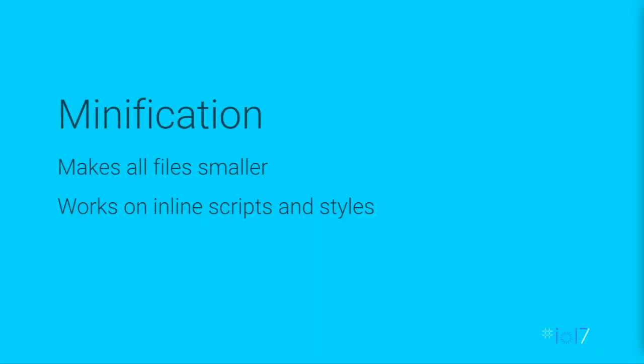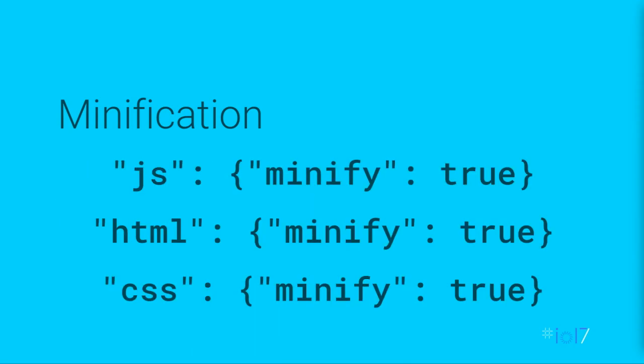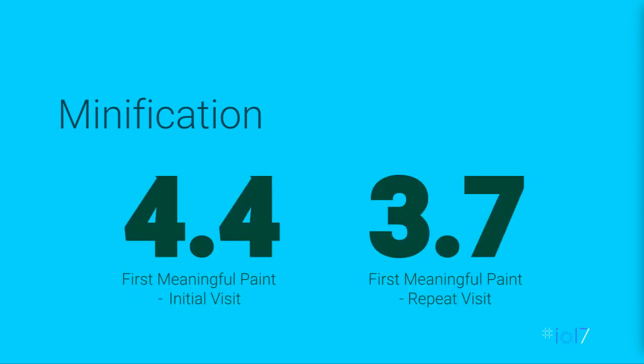The first optimization is minification. Pretty much every app does minification — you'd be crazy to go to production without it. It makes all files smaller, and in our system that splits apart HTML, we also minify inline scripts and styles. You can add a couple of options to your polymer.json to turn minification on for the different languages. With minification on, we've brought our initial load first paint time down to 4.4 seconds — a 25% improvement. This is a no-brainer.